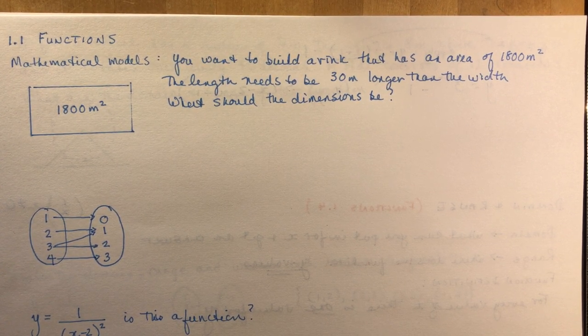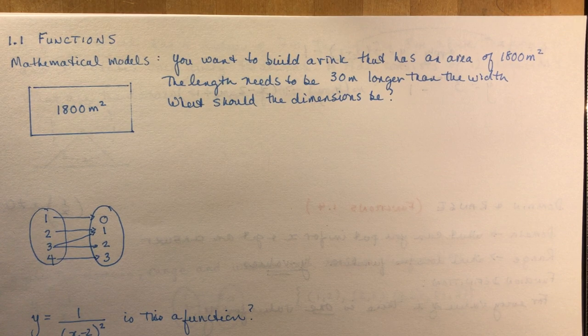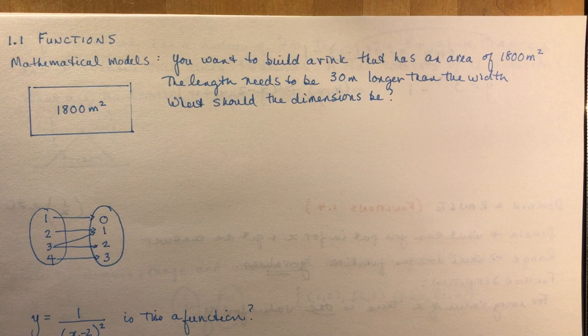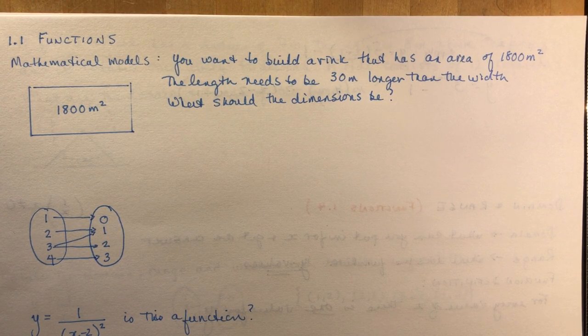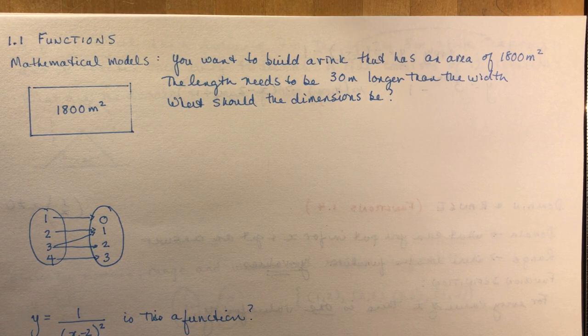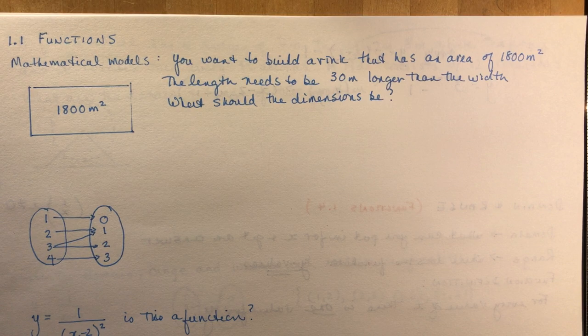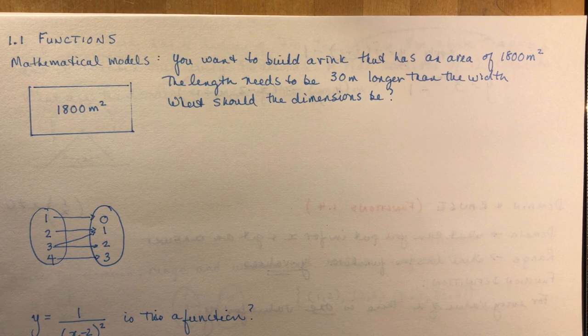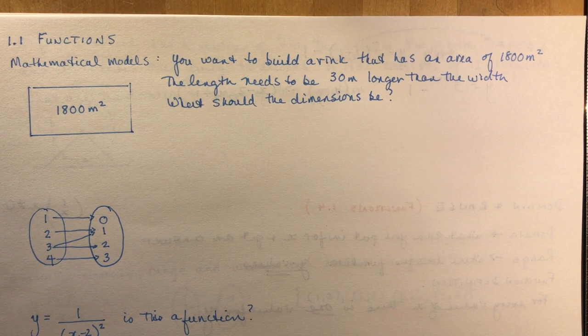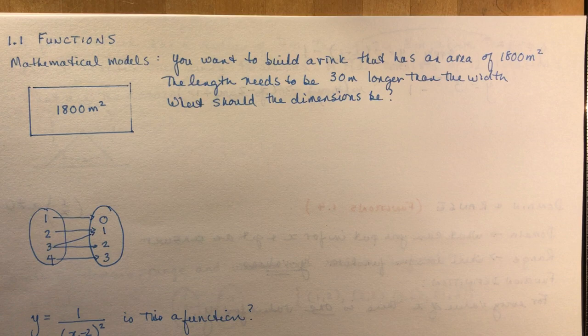Chapter 1 is a pretty easy chapter. I think you'll find it's mostly review, but hang on to your hats because it does get much more difficult, especially when we get into chapter 6 in trigonometry. So 1.1 talks about some mathematical models and a lot about domain and range and whether something is or is not a function.